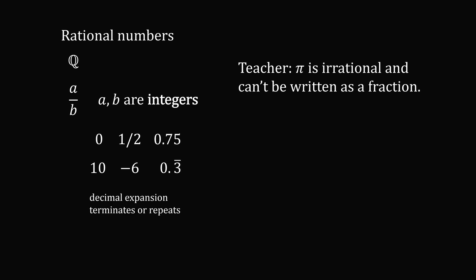Now, there's a joke. A teacher says pi is irrational and can't be written as a fraction. And a smart student says, what about pi over 1? Well, this doesn't mean pi is a rational number, because pi in the numerator is not an integer. A rational number must have A and B be integers.